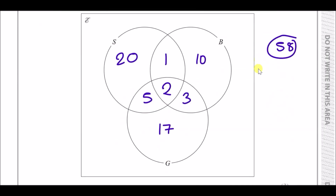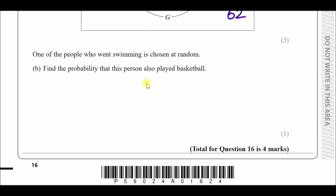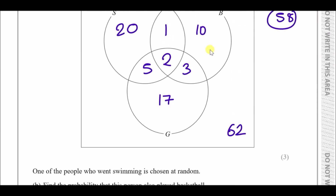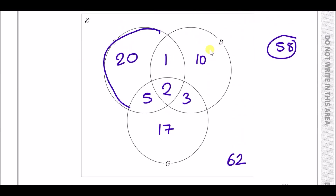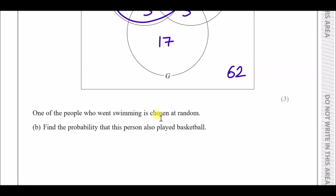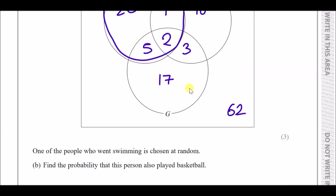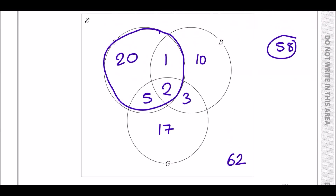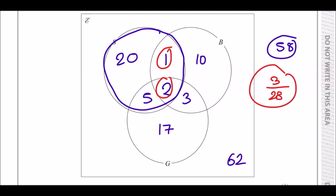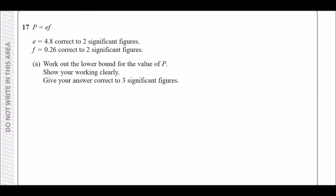Adding all values gives 58 people across the three sports, which is nowhere near 120, so 62 people were doing other things. For part b, one person from the swimming group is chosen at random. Three swimmers also played basketball out of 28 swimmers total, so the probability is 3 over 28.